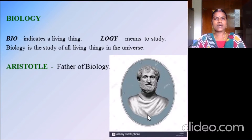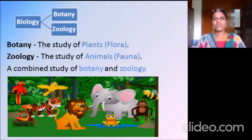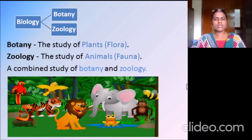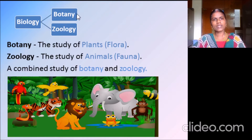This is Aristotle — he is the father of biology. Biology includes two subdivisions. The plants are otherwise called as flora, and the animals are otherwise called as fauna. The study of flora is botany, and the study of fauna — that is animals — is called zoology.